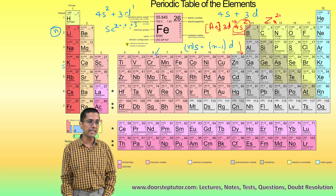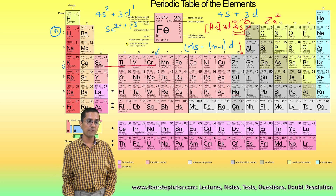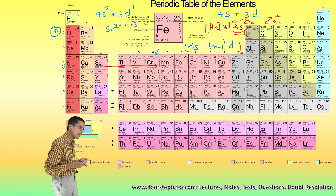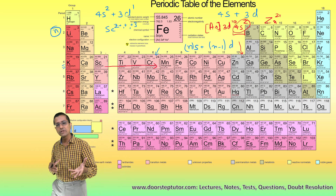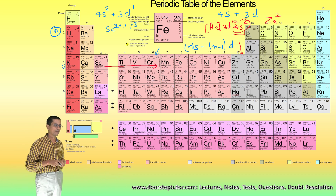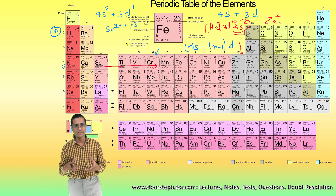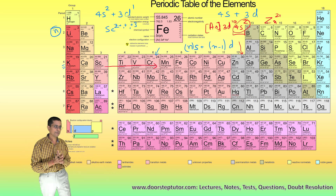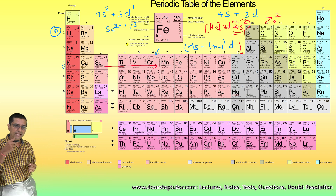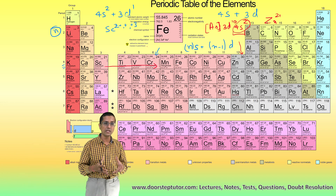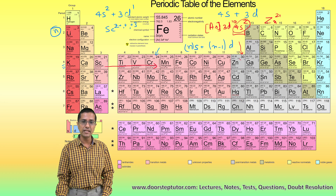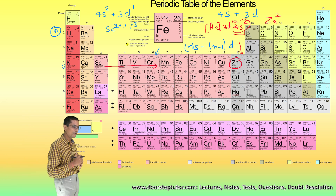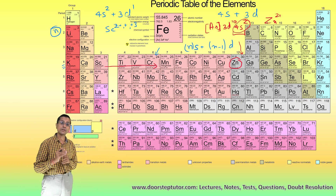Another thing we can observe is that as we move from left to right in the D-block, the participation of D electrons in bonding actually reduces. The NS electrons become more and more active in bonding. The reason is that as the D subshell starts getting full, there is a lot of energy loss due to exchange energy — which we have discussed in a separate class — and the D electrons become less important for valence. In the case of zinc, the D orbitals have completely lost their value; they do not participate in bonding, and only the 4S electrons participate.